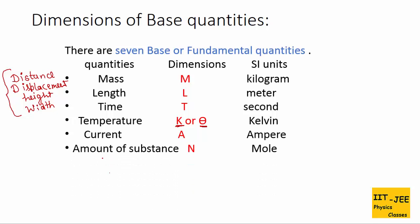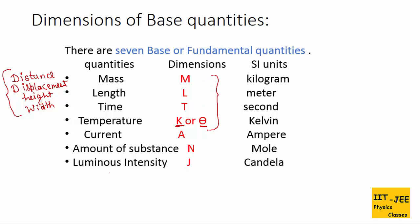The sixth base quantity is amount of substance. Its SI unit is mole and dimension is capital N. The seventh quantity is luminous intensity; its SI unit is candela and dimension is capital J. The most used dimensions are these four.